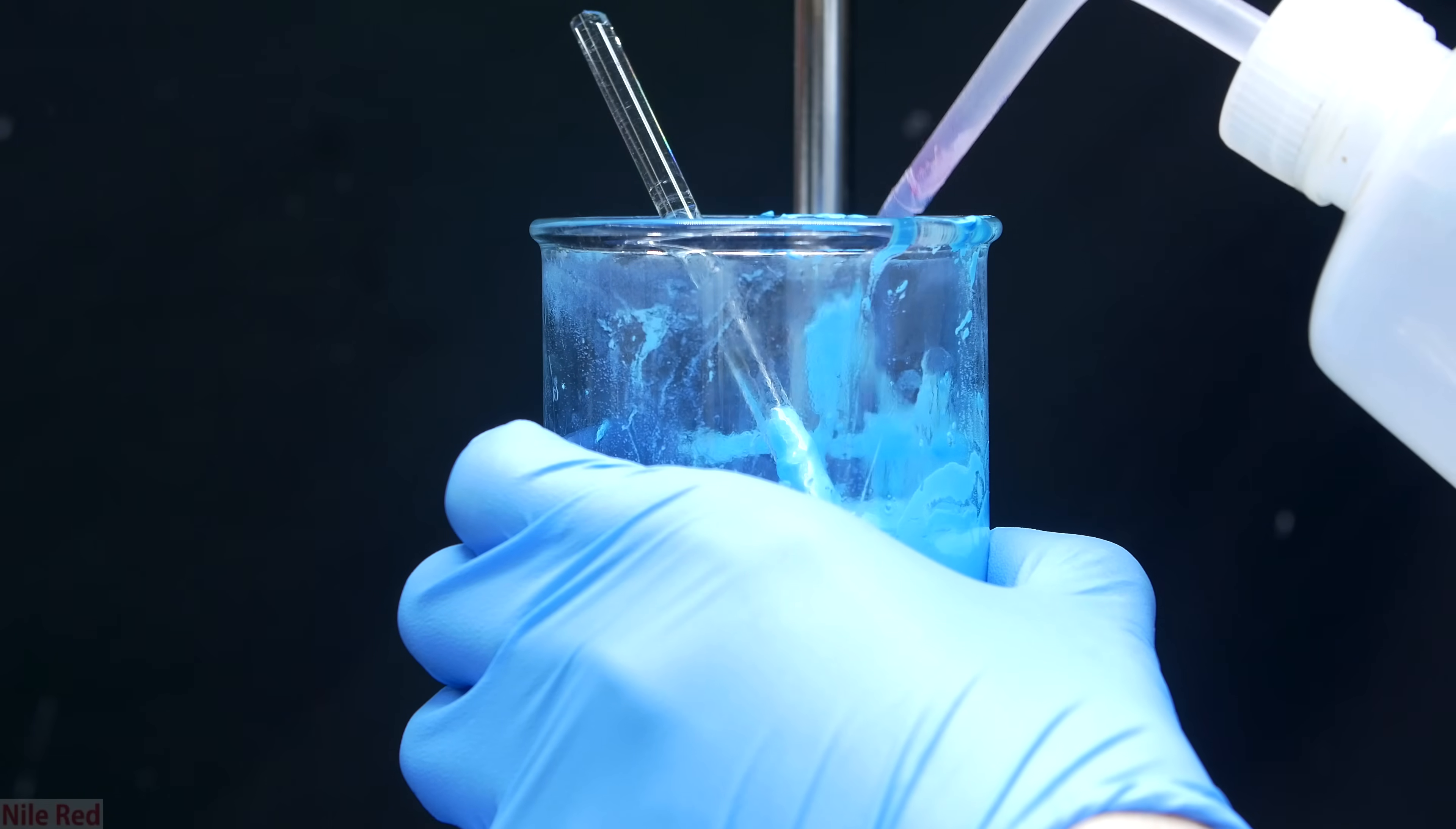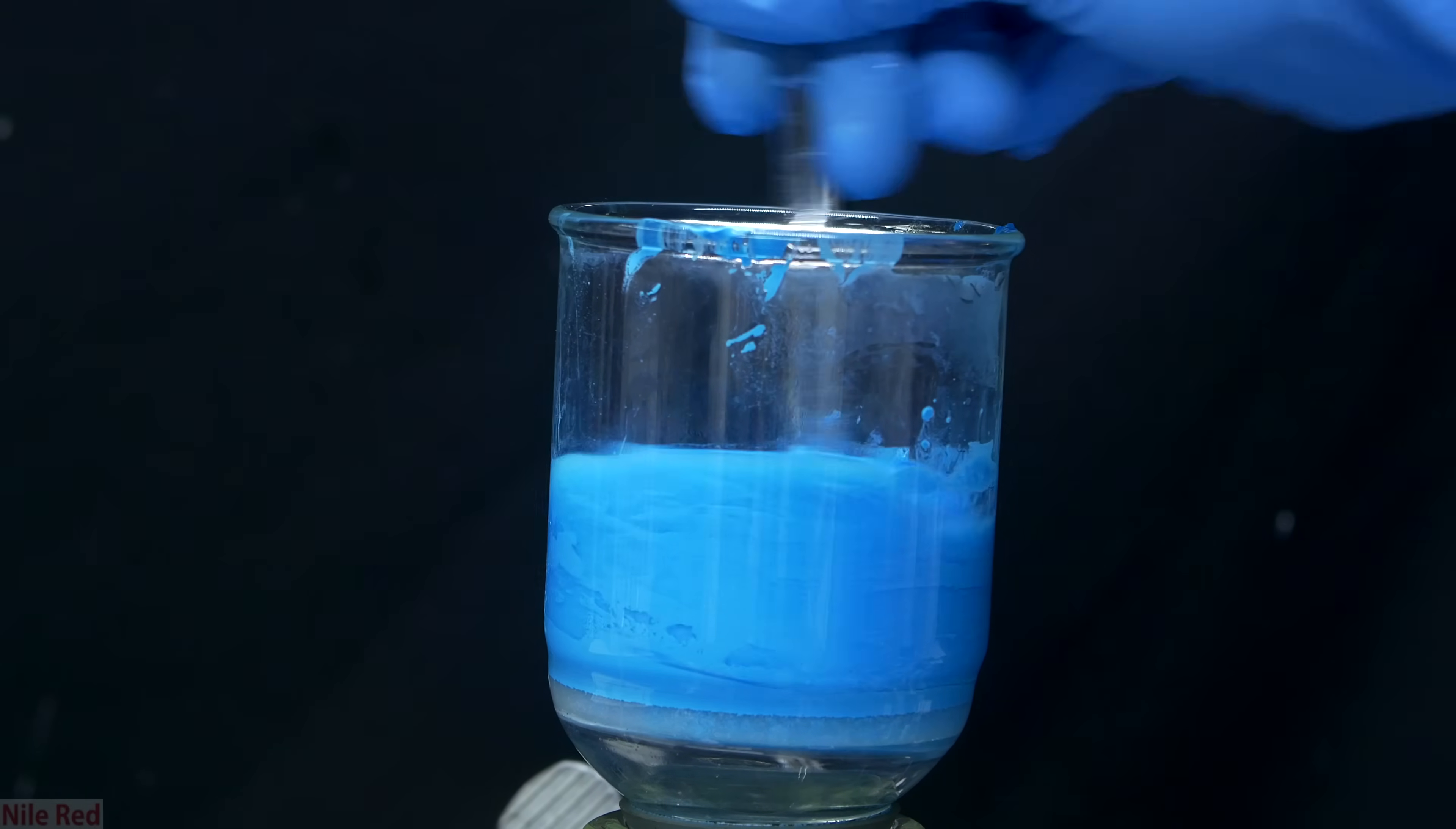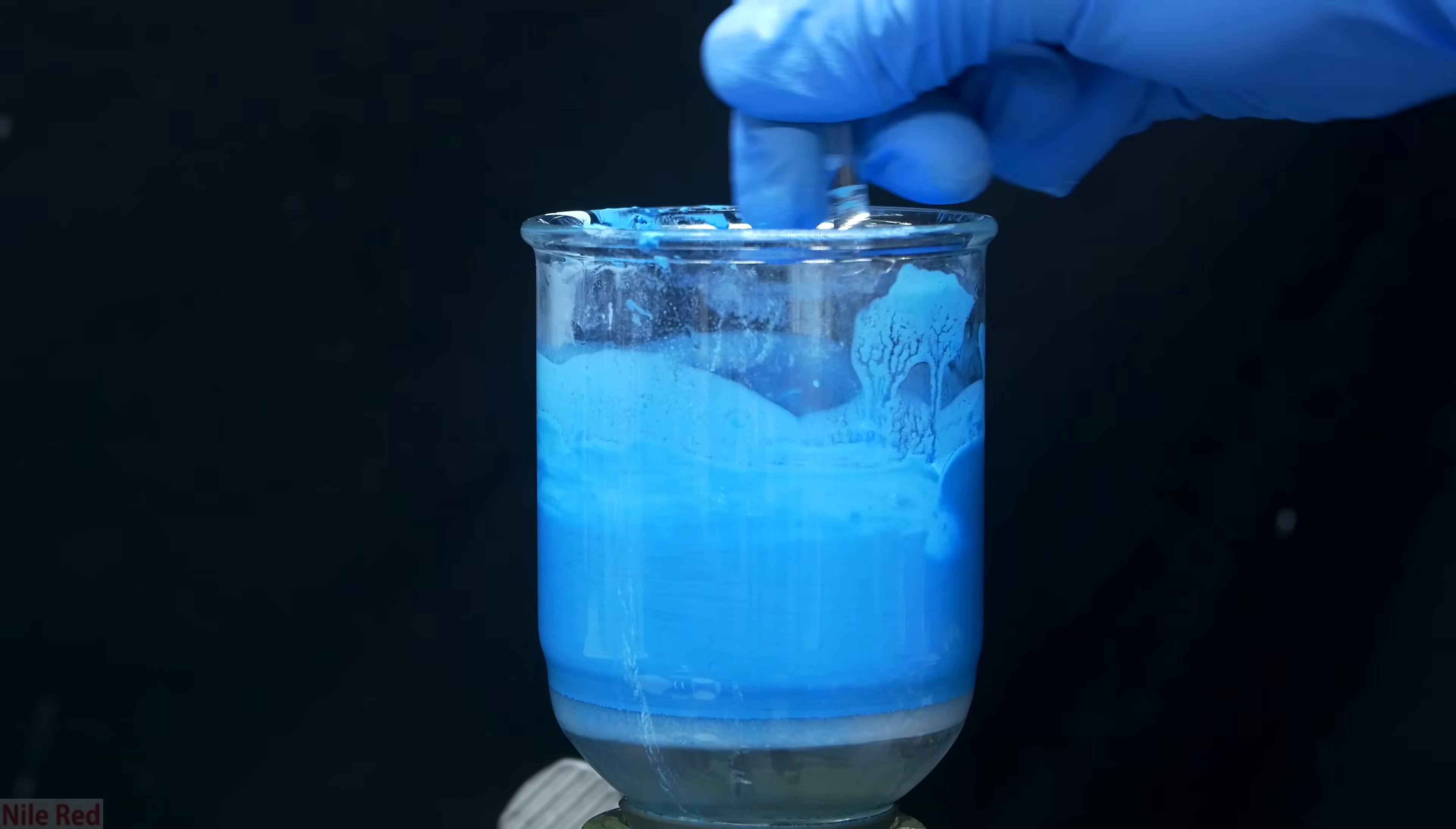Now our copper hydroxide should be relatively clean and free of ammonia and sulfate ions, but we still need to dry it up, and to do this I used some acetone. By washing with acetone we can get rid of the water, but the acetone is much more volatile, so once we're done here, we can just let the copper hydroxide sit out in air and it will dry pretty easily.